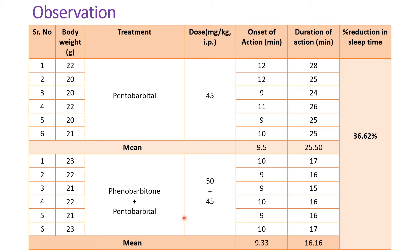In Group 2, the onset of action is 10, 9, 9, 10, 9, and 10 minutes. When we calculate the mean, it comes to 9.33 minutes. We can see clearly that the onset of action will not be changed — it is almost the same: 9.5 and 9.33 minutes.